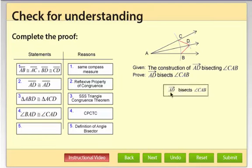And finally, we conclude that ray AD bisects angle CAB by definition of angle bisector. We have CAD and BAD, those two angles. They're congruent. That means ray AD is the angle bisector for angle CAB.